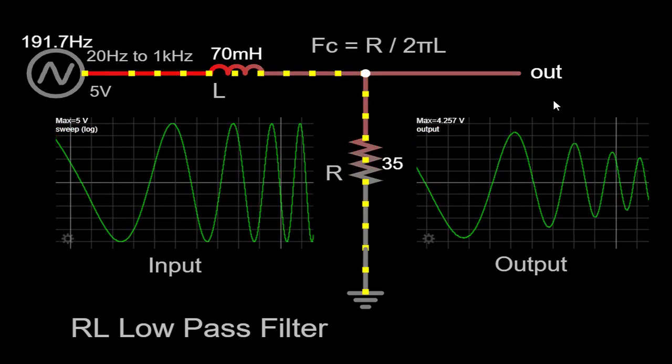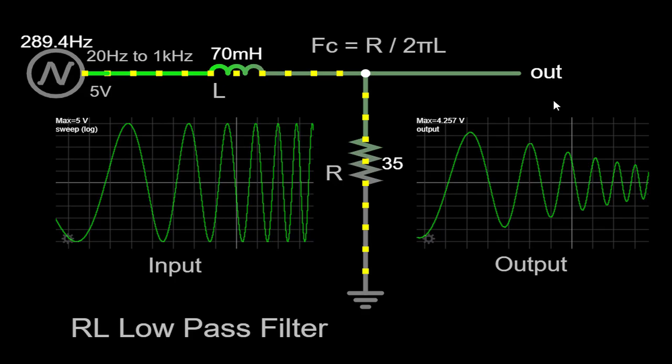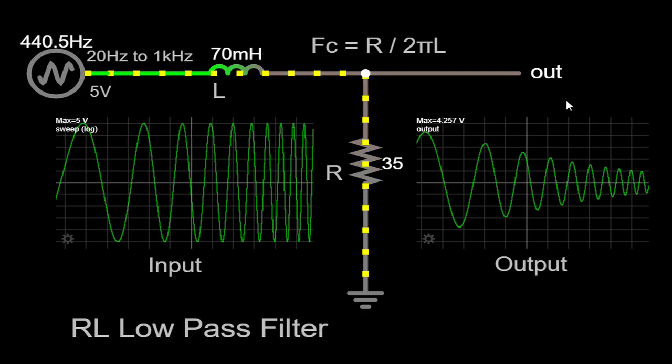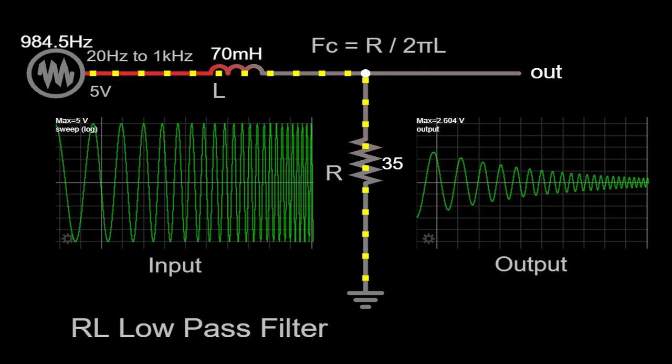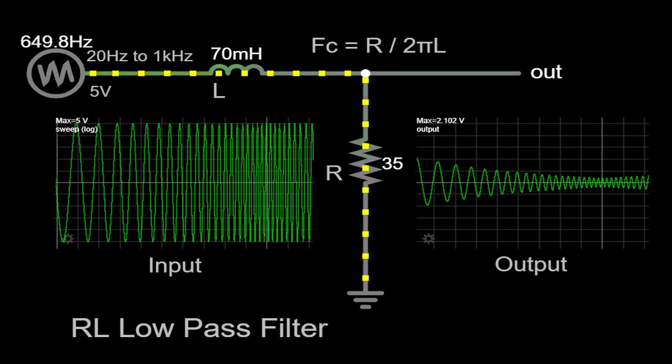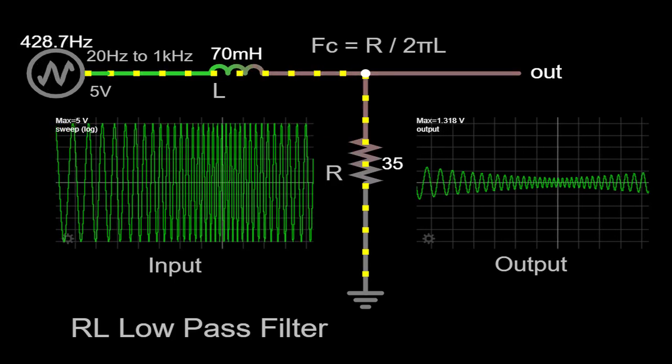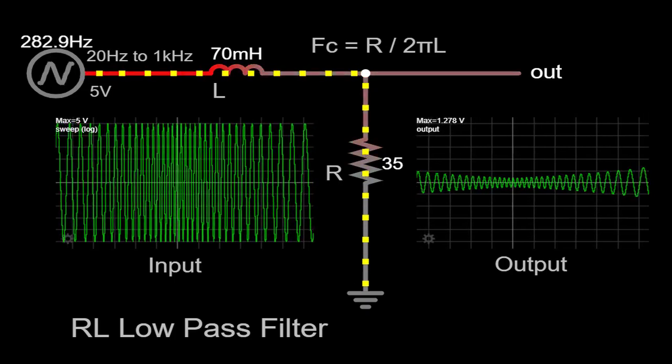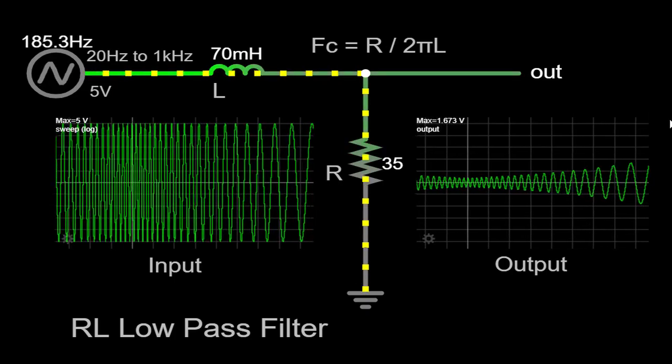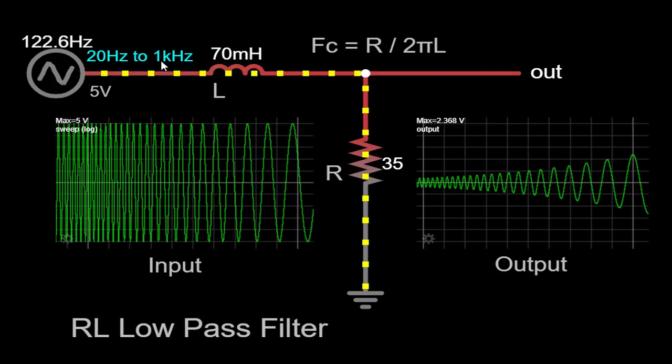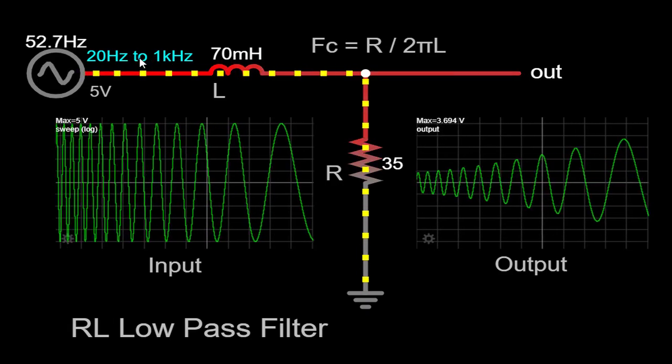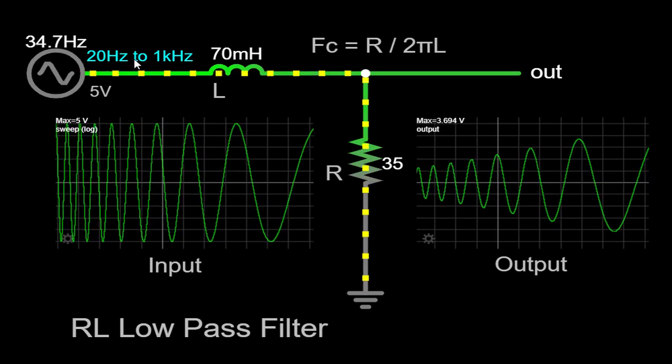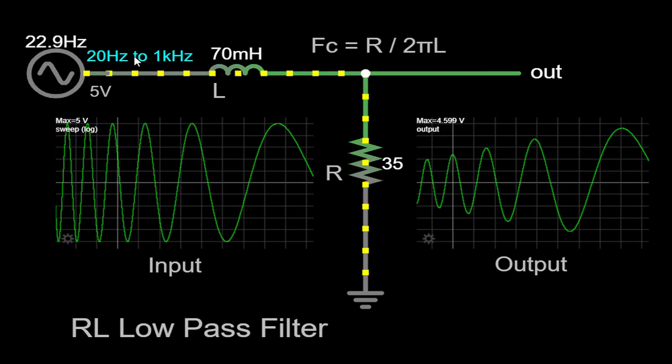In our demonstration, we will be using a circuit simulator with a sweep function. This allows us to observe the filter's behavior across a range of frequencies by systematically varying the input signal's frequency. In our simulation, we will sweep the input signal's frequency logarithmically from 20 Hz to 1 kHz over a duration of 100 milliseconds. This logarithmic sweep provides a comprehensive view of the filter's response across a wide frequency range.